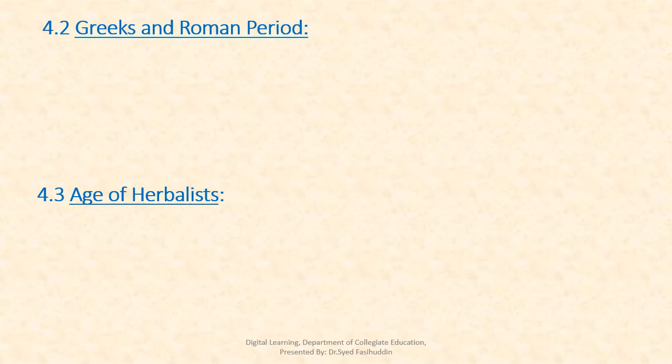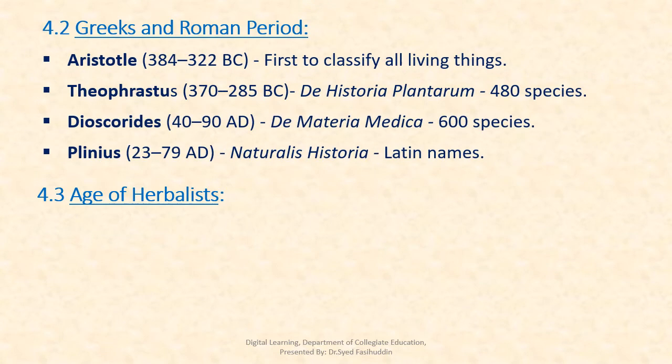The Greek and Roman period: Aristotle was the first to classify all living things. Theophrastus described 480 species of plants in De Historia Plantarum. Dioscorides described 600 species of plants in De Materia Medica. Pliny used Latin in his book Naturalis Historia.